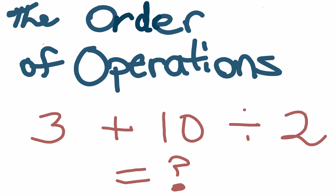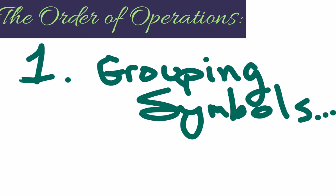The order of operations. First step in the order of operations, the priority of the operations would go to the grouping symbols. Now what we're looking at here would be anything like parentheses. You want to work your way from the inside out.